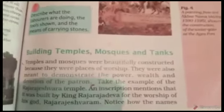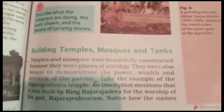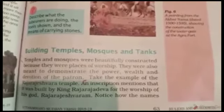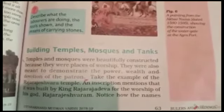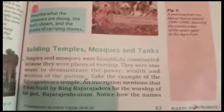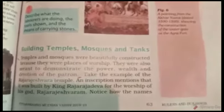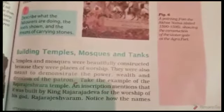Building temples, mosques, and tanks. Temples and mosques were beautifully constructed because they were places of worship. They were meant to demonstrate the power, wealth, and devotion of the patron. So the temples and mosques were beautifully constructed.